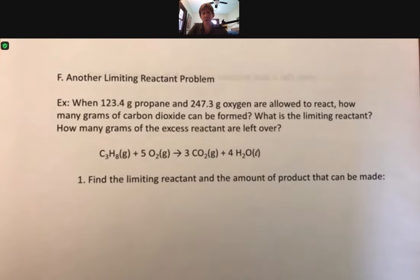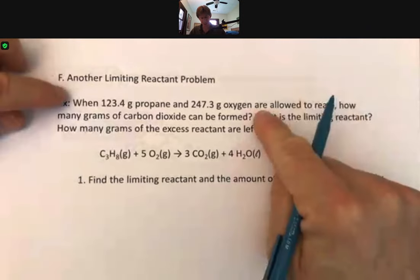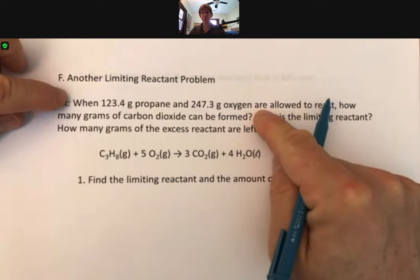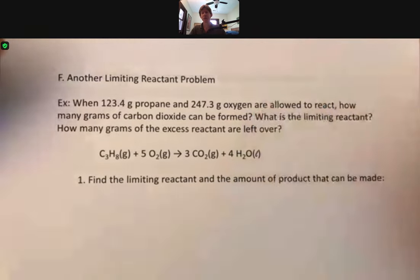All right, in this limiting reactant problem, it's much more like what you're going to see on the homework, especially this first sentence here. When 123.4 grams of propane and 247.3 grams of oxygen are allowed to react, how many grams of carbon dioxide can be formed?